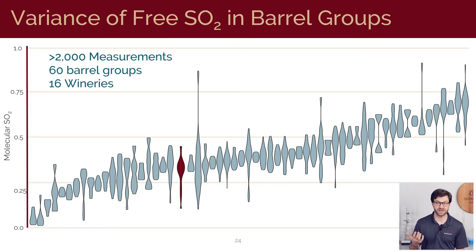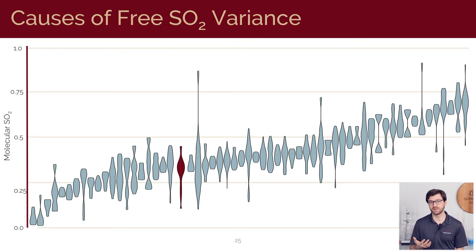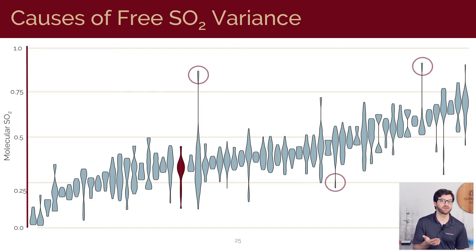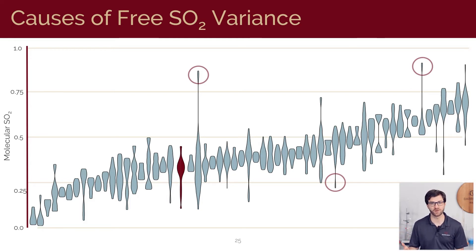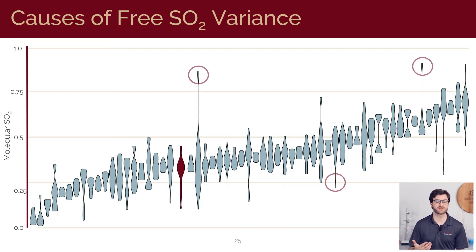What do we think causes these variations? Why would the same wine in similar barrels in the same cellar sitting right beside each other vary so much in free SO2 levels? We're still trying to understand this, but in some cases — say where we have a few barrels that are roughly double or half of the rest of the group — these are likely the result of human error, where one barrel addition was missed or a barrel received a double dose.